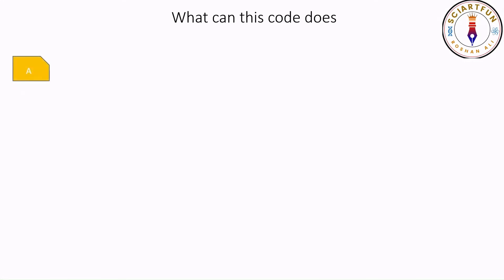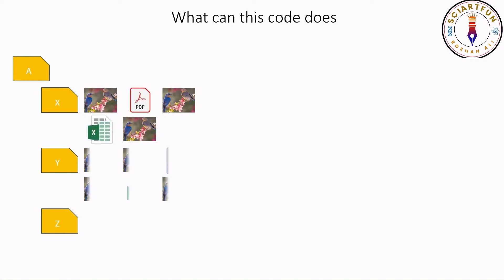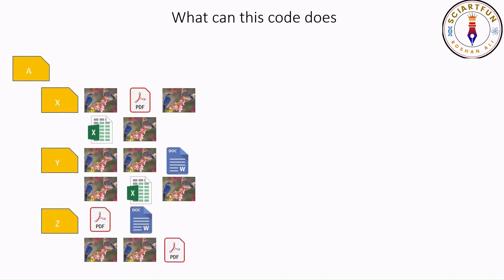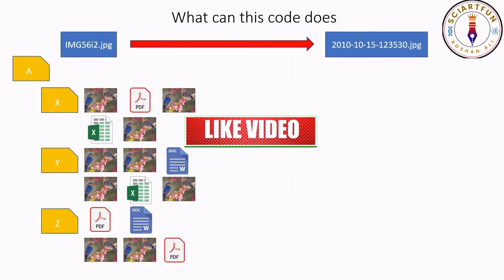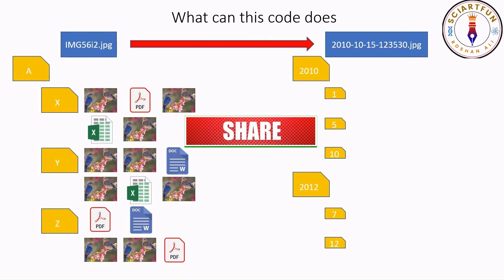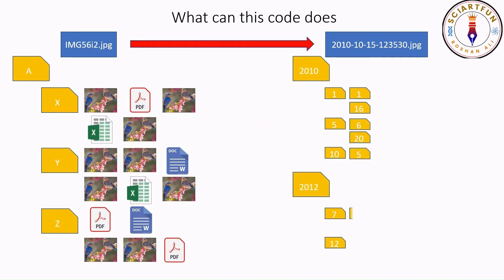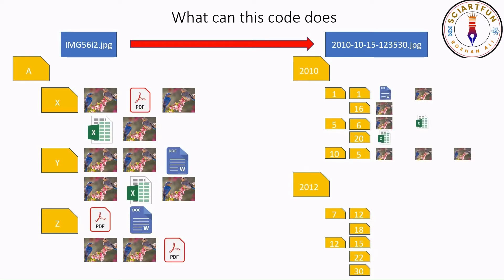For example, you have a folder A containing subfolders X, Y, and Z — all of them contain a mixture of all kinds of files. They have names like this, but you want to rename them with year and date etc. You want to divide them into folders year-wise. Each year folder contains month folders, and month folders contain date folders. Each folder in turn contains files taken at that date.